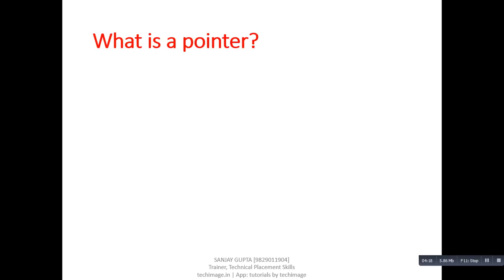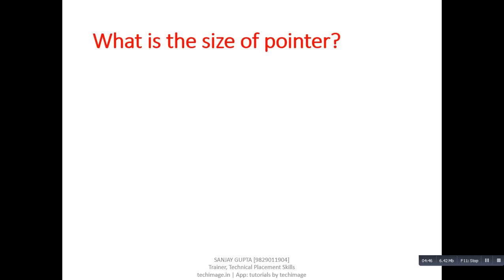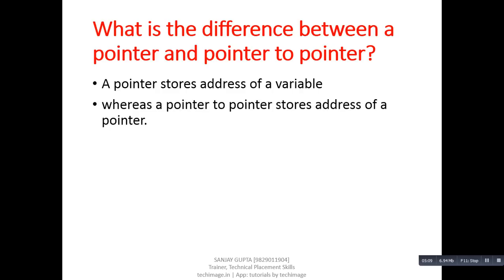Next question: what is a pointer? Answer: a pointer can store the address of a variable. Next question: what is the difference between the ampersand and asterisk operator? Answer: ampersand is known as the address-of operator, whereas asterisk is known as value-at-address. Next question: what is the size of a pointer? Answer: two bytes if we are using a 16-bit compiler. Next question: what is the difference between a pointer and a pointer to pointer? Answer: a pointer stores the address of a variable, whereas a pointer to pointer stores the address of a pointer.